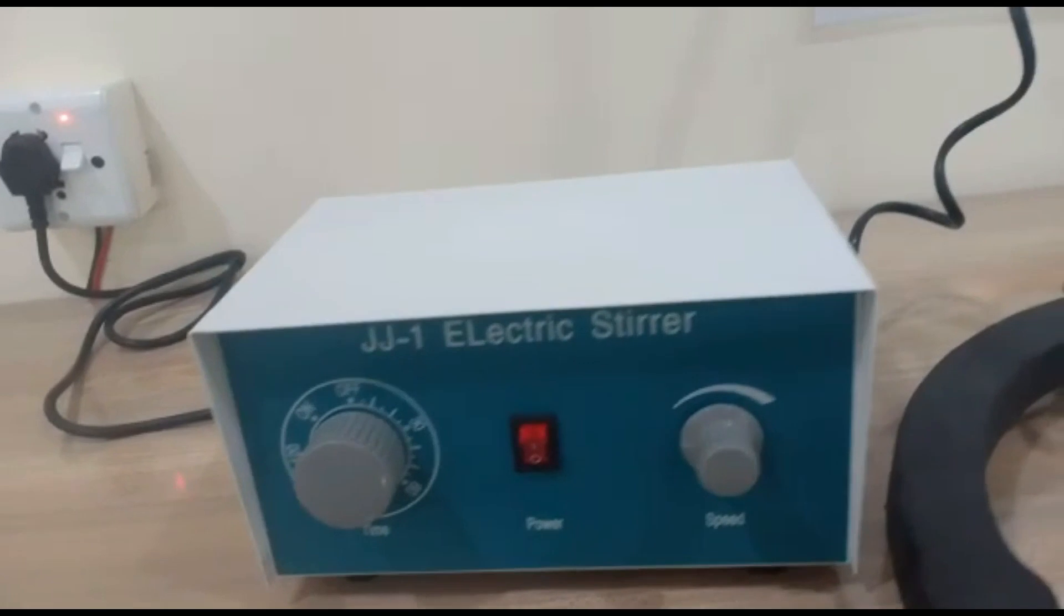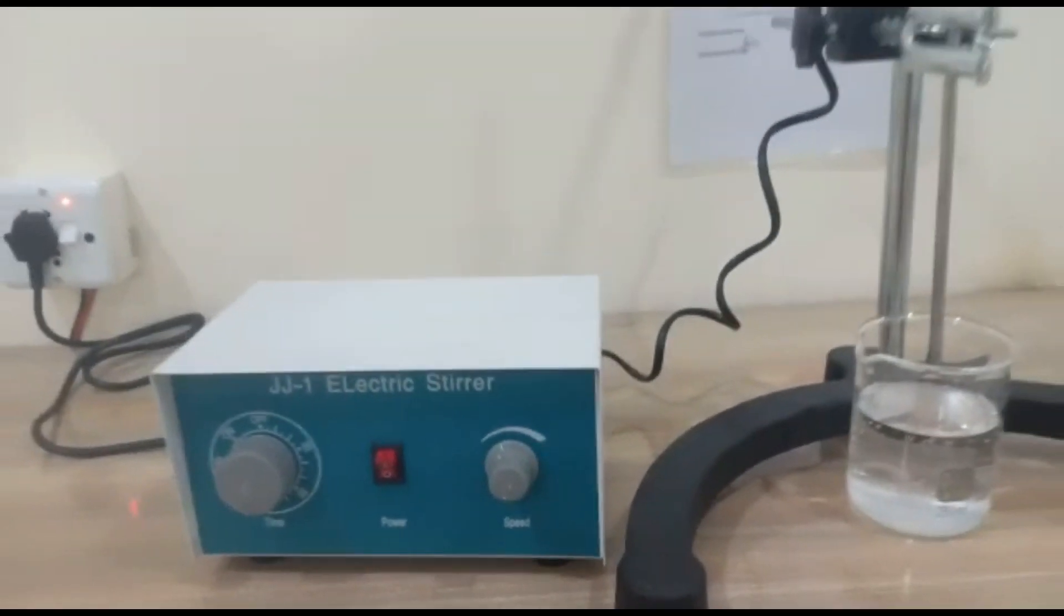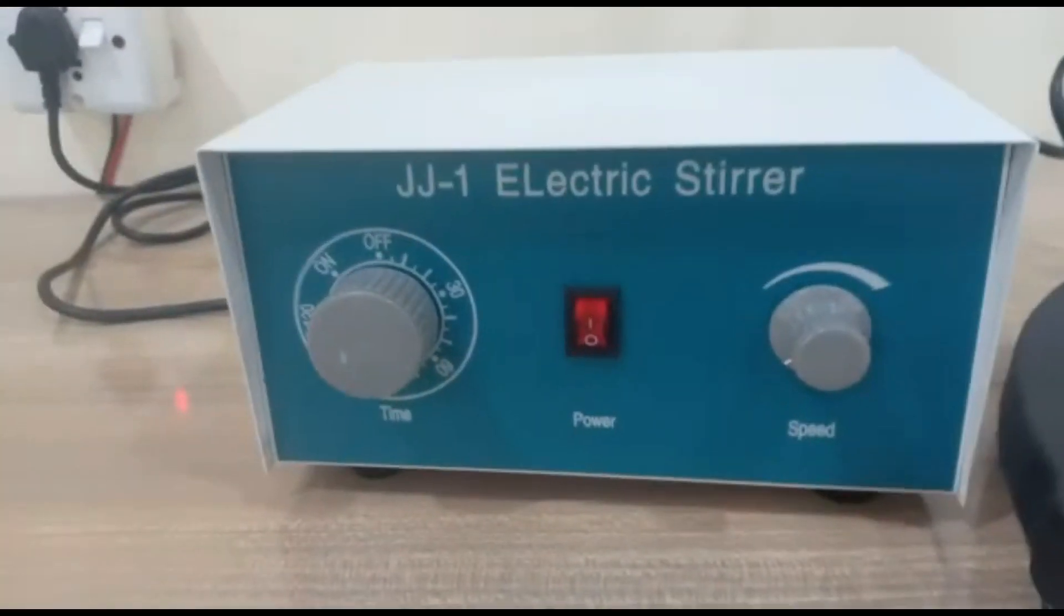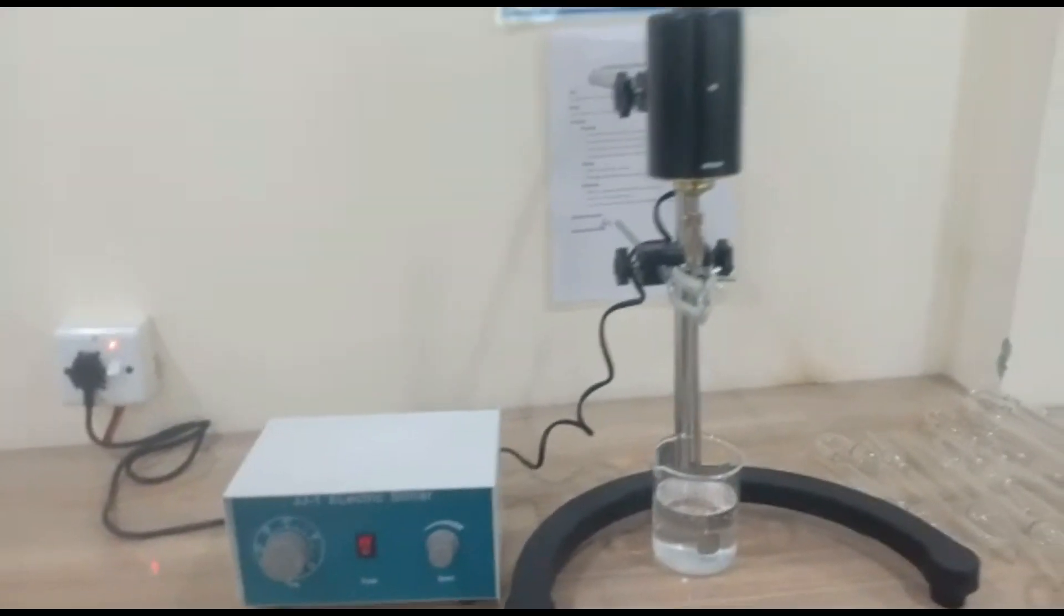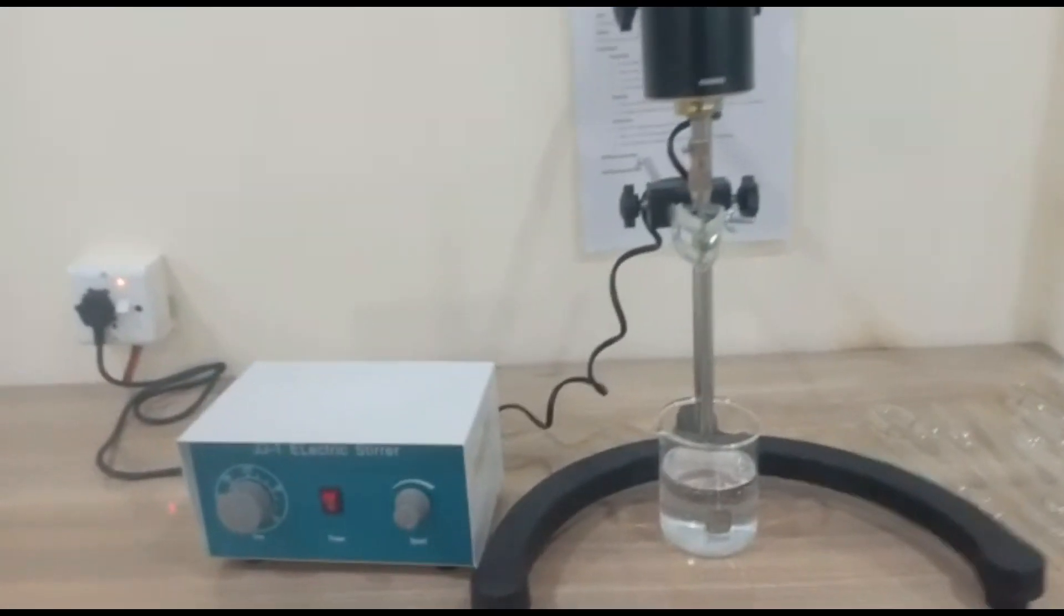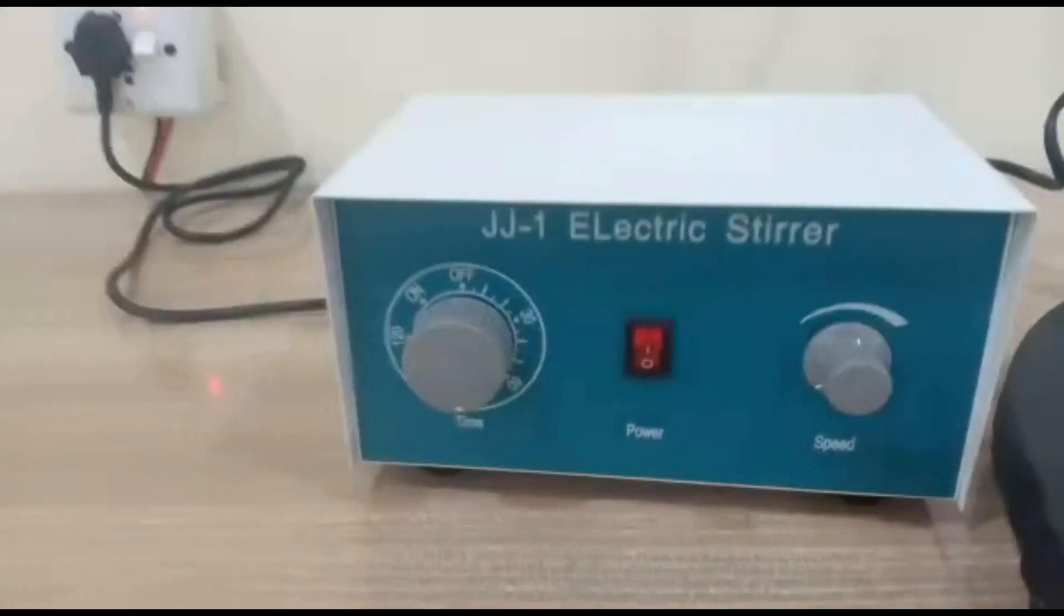Basically, we have two instruments. You will see that it is a motor where we control speed, and it is an assembly. We will basically rotate it. We utilize it for stirring purpose.